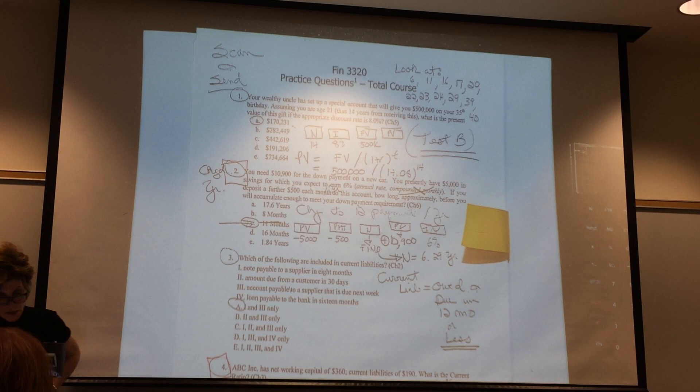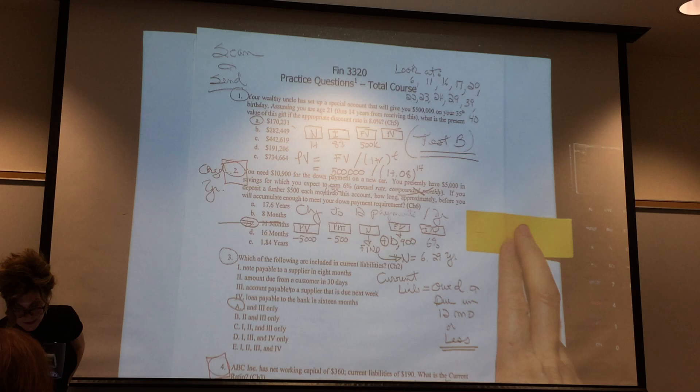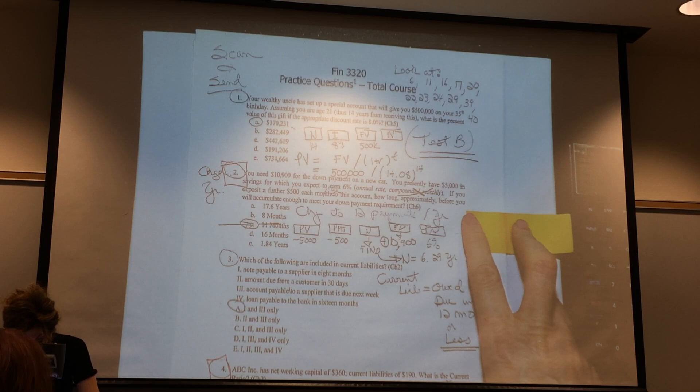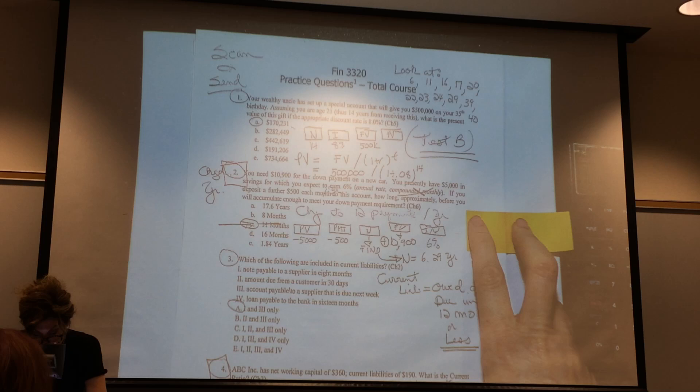This is another example. You need $10,900 for a down payment of a new car. You presently have $5,000 in savings for which you expect to earn 6%. If you deposit a further $500 a month each month into this account, how long approximately before you will accumulate enough to meet your down payment requirement?